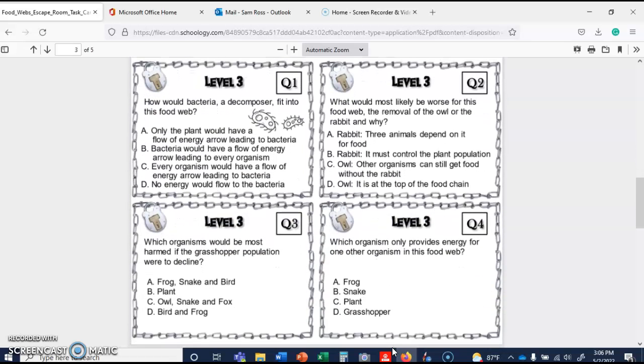Level three says, how would bacteria, which is a decomposer, fit into this food web? So that's also the food web we were just looking at. So let's see what our answers are. It says no energy would flow to bacteria. Every organism would have a flow of energy arrow leading to bacteria. Bacteria would have a flow of energy arrow leading to every organism. Only the plant would have. So every organism has to die, and the bacteria gets its energy from that dead organism. So the answer here is C.